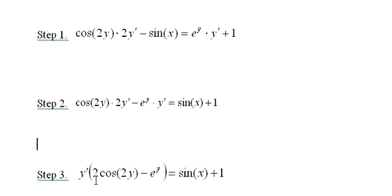Of course the last step is to divide by this factor right here, 2 cosine 2y minus e to the y. Divide both sides of the equation by that factor.